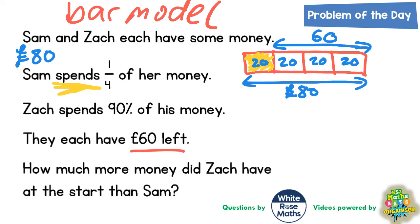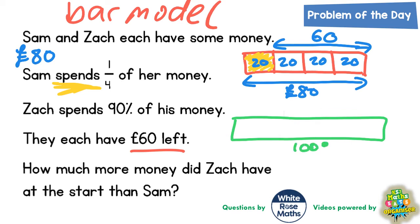Now, Zach spent 90% of his money. So what we're going to do is draw a bar going up to 100%. The whole bar is 100%, and we need to split this into 10 pieces, with 10% in each piece. If he spent 90%, then he spent nine pieces, because 10 lots of 10% would be 100%, so 90% is nine pieces.